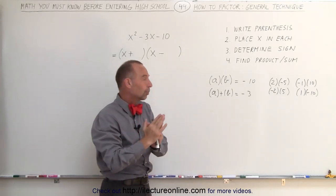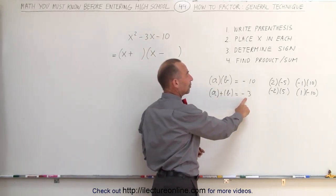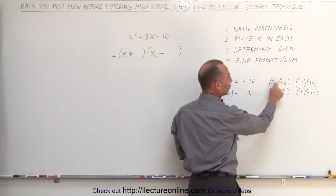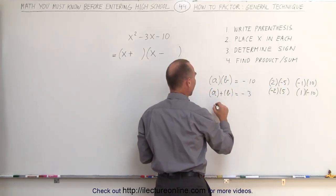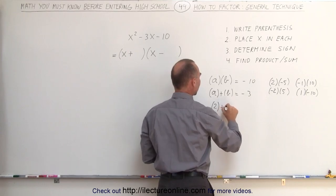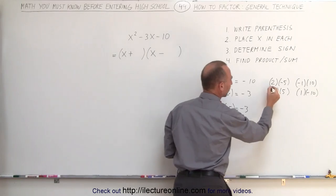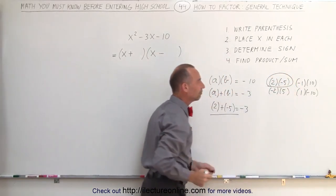However, when you add the two numbers together, you should get a negative 3. And of all the choices, the only two numbers when you add them together are these two numbers. Therefore, you can say that a 2 added to a negative 5 adds up to negative 3, and so bingo, those are the two numbers. Those are the two numbers you're looking for.